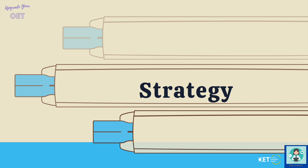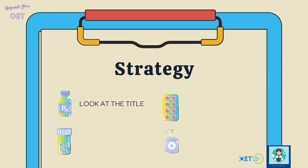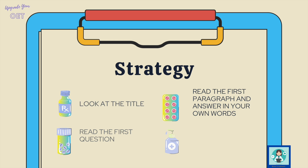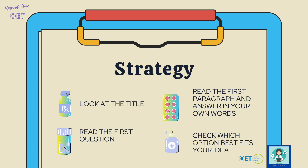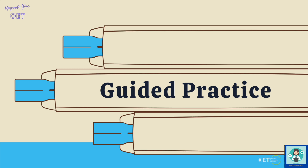My strategy: first I look at the title because it gives me a clue about what the text is about and gets that metacognitive ability working — your brain starts picking out vocabulary and things you've read before. Then I tackle each question one at a time. I read the question, read the paragraph, and try to answer in my own words, and only then do I look at the options to see which best fits my idea.